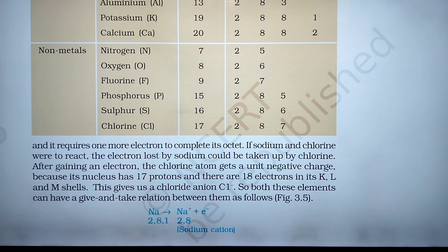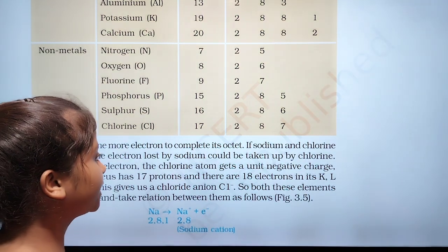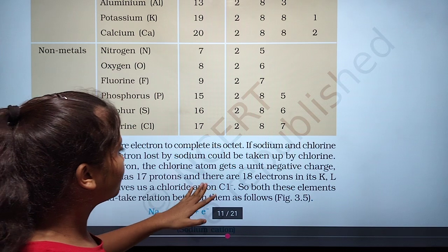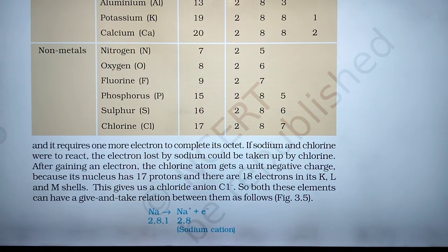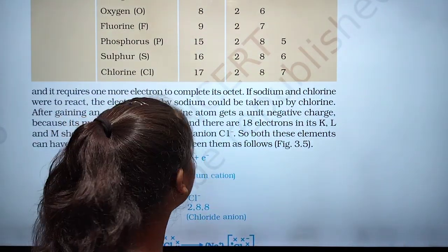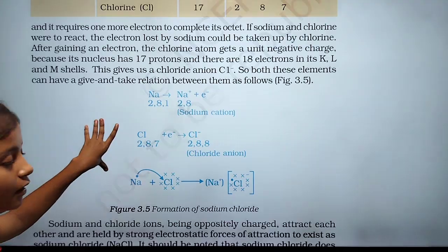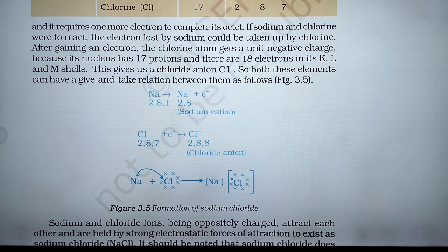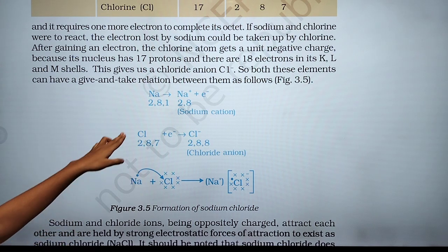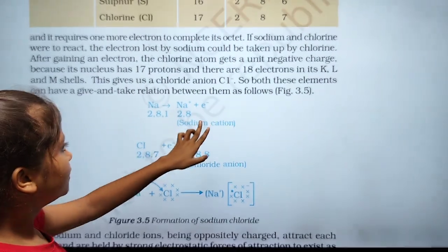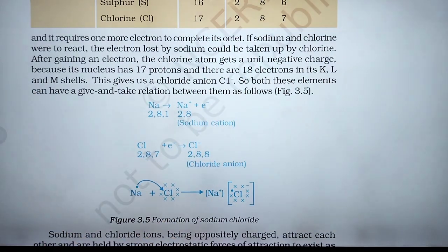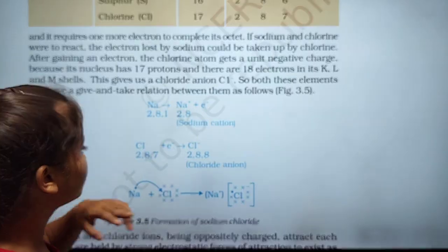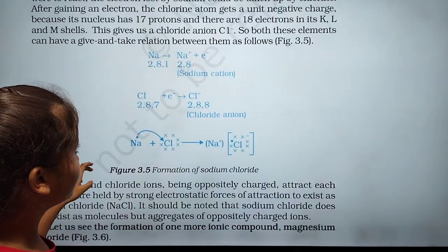Now if sodium and chlorine were to react, the electron released by sodium could be taken up by chlorine. The chlorine atom becomes negatively charged because the nucleus has 17 protons and there are now 18 electrons. From sodium there is one electron released, and chlorine gains that one electron to complete its octet.